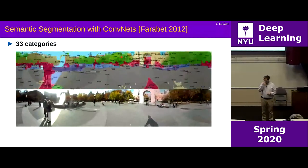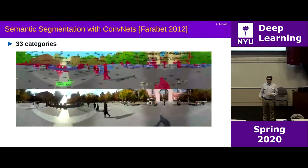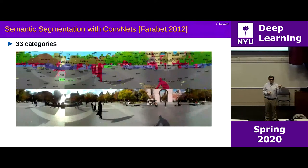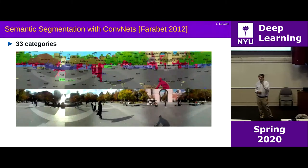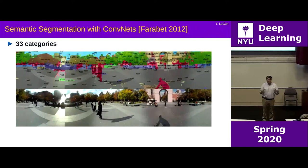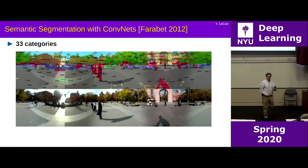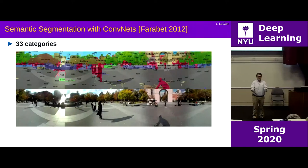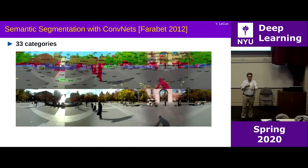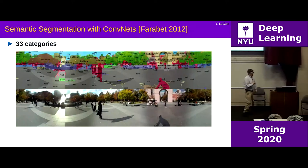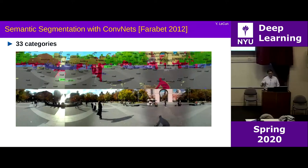After hearing about convolutional nets, the professor told Mobileye engineers to try the technique. The engineers were skeptical, so he implemented it himself and beat all their benchmarks. The whole company then switched to using convolutional nets. They became the first company to come up with a vision system for cars that could keep a car on a highway and brake for pedestrians or cyclists — using semantic segmentation very similar to the robot navigation approach.